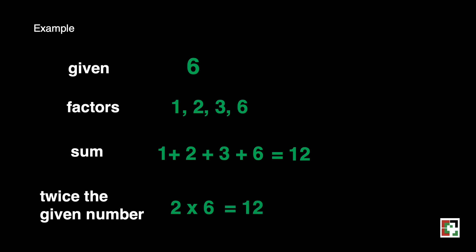That's also 12. If the sum of the factors of the given number is equal to twice that number, then we can say it is a perfect number. So, we can say that 6 is a perfect number.